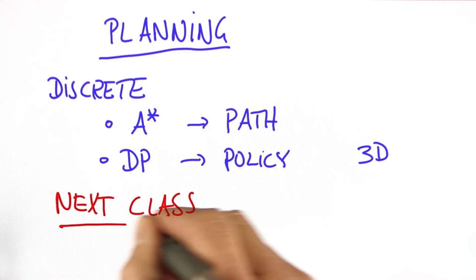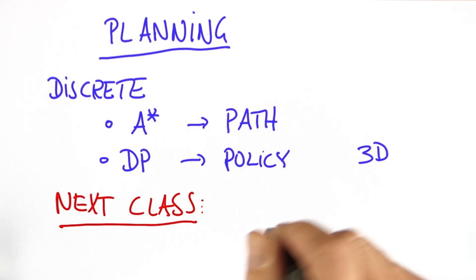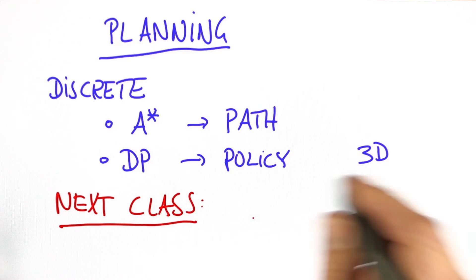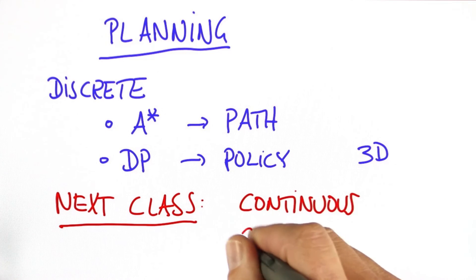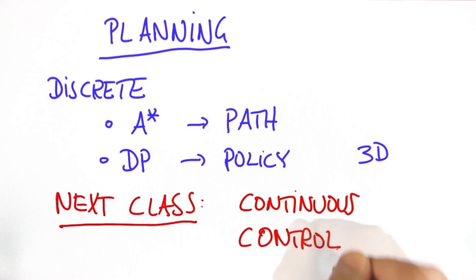In the next class, we talk about how to turn this into actual robot motion. So we talk about continuous state spaces, and we talk about what's called control, in which we make a robot move. I'll see you next week.